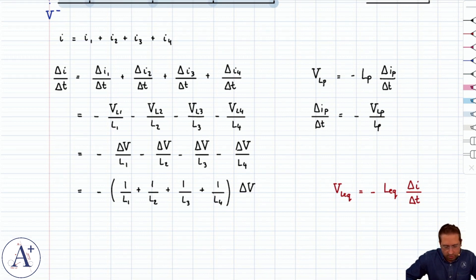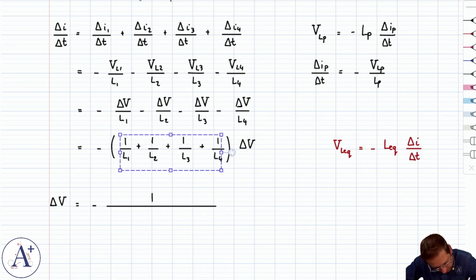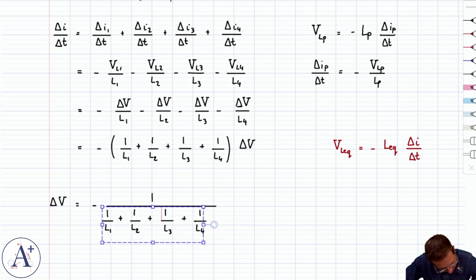So we're almost there. Maybe we can rearrange this a bit and say that actually what comes out of this is delta V is equal to minus 1 over, now this whole thing here, 1 over L1 plus 1 over L2 and so on and so forth, multiplied by delta I over delta T.